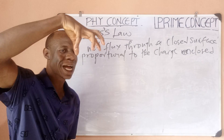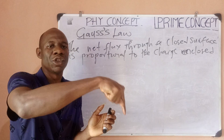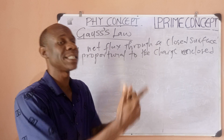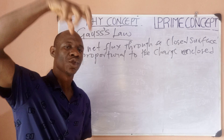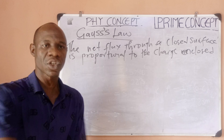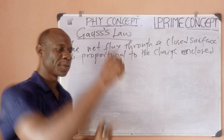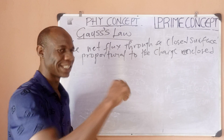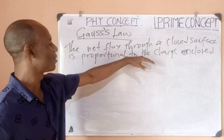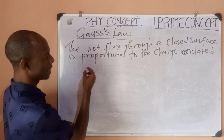Relating this to Gauss's Law: if you have a charge trapped in a closed system and you don't know the value of that charge, the easiest way to find out is to get the total flux coming out from it. Because the total flux coming out can always be known, if you know the total flux you can tell the value of the charge inside. That is simply Gauss's Law.